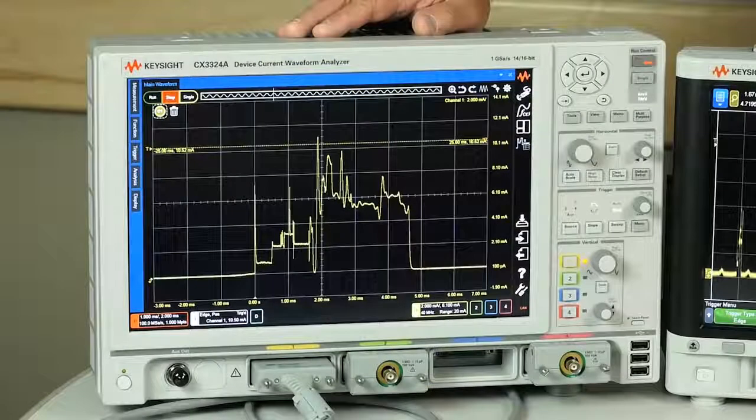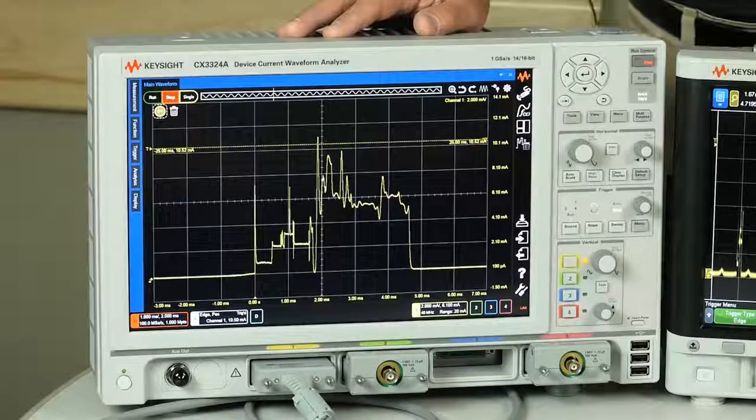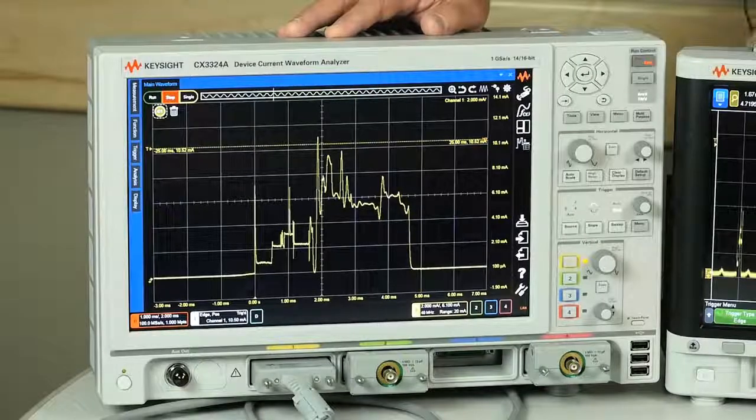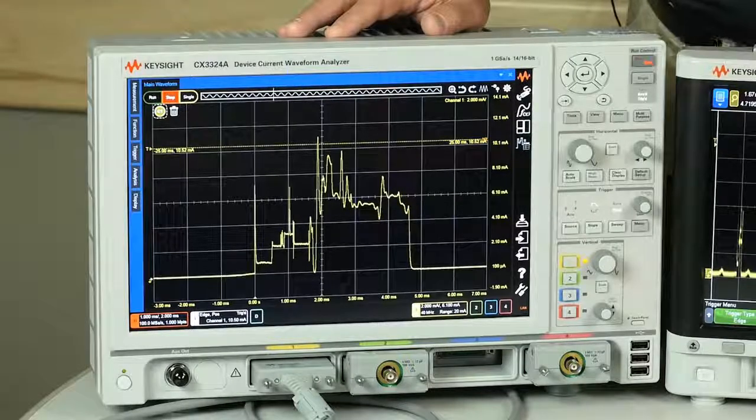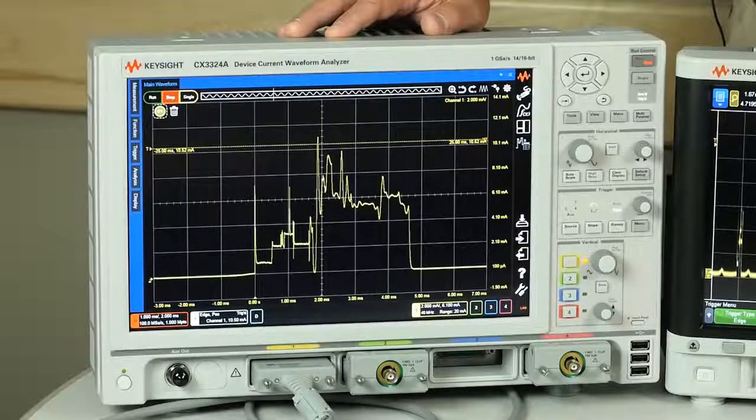So the waveforms we're talking about are quite complex. As seen on the display of the CX3300 family here, they have amplitude ratios of 200 to 1 or more.